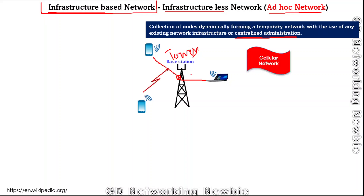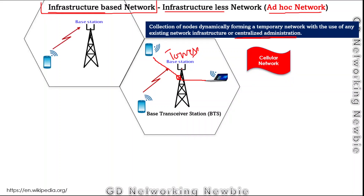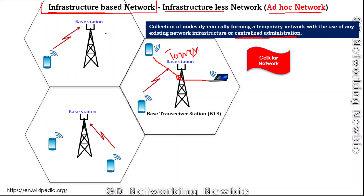One example of an infrastructure-based network is the cellular network, which we call a mobile network. In a cellular network, the geographic area to be covered with a signal is divided into cells. Every cell is covered by at least one base station — technically called a BTS, or Base Transceiver Station. To give coverage to a larger area, these cells are replicated, with different base stations covering different areas.